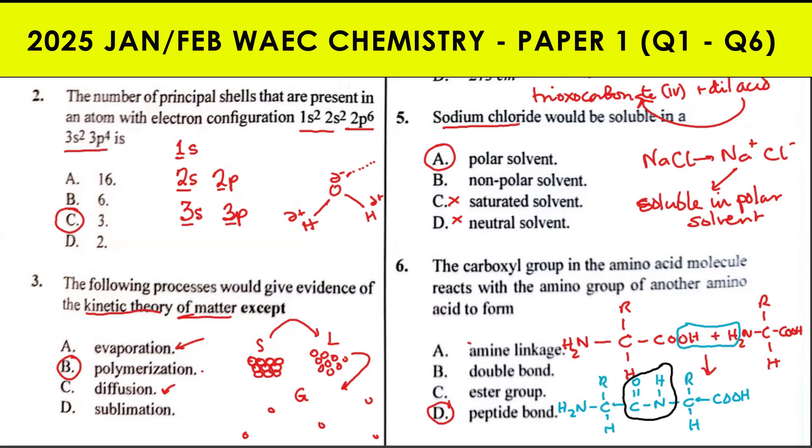It's not an amine linkage, not a double bond, not an ester group because this is not an ester bond. If it were an ester, it would be C=O-O. C-O-O-C is ester. But C-O-N-H is the peptide bond, or you can call it amide linkage.